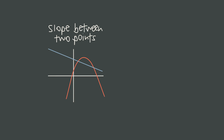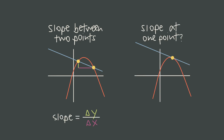In algebra, we spent a lot of time finding the slope of a line. We always needed two points because the formula for slope is rise over run. But what if you only have one point? How do you find the slope of a curve at a single exact instant? It seems impossible with our old tools, but this one question is the key that unlocks calculus.